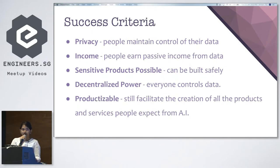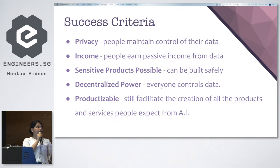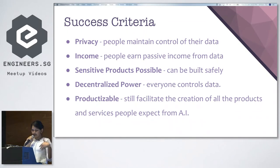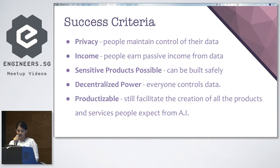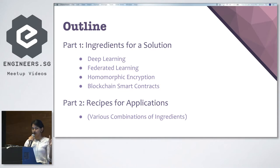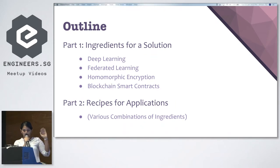Now that we've talked about the problems, let's look at the success criteria — what would a solution that solves all of these issues need to have? The first thing is privacy: people need to be able to control their data, and it would be great if people could earn a passive income from their data. Once these two things are taken care of, sensitive products can be built, power can be decentralized, and companies can still sell a valuable product. These four technologies come together to form the OpenMind platform, and I'll go through each component one by one.